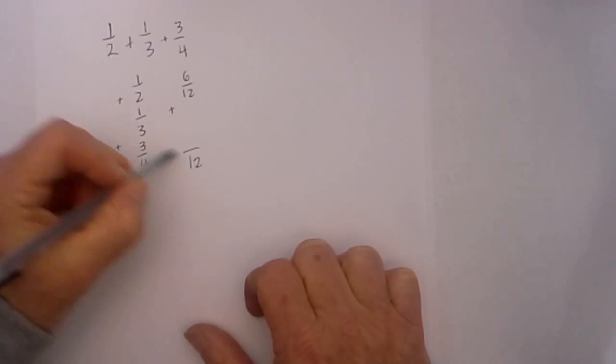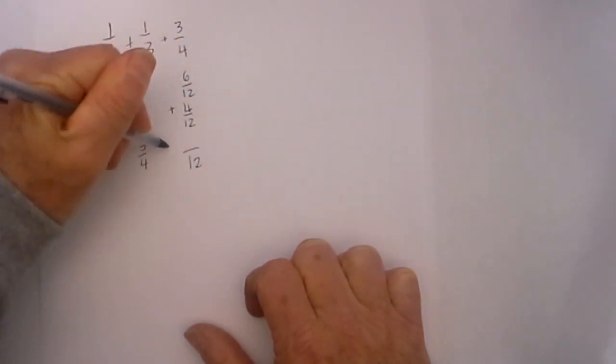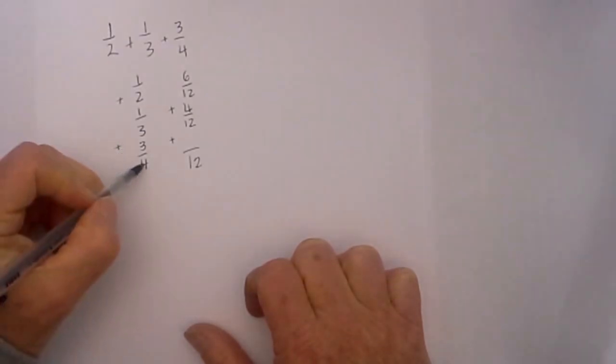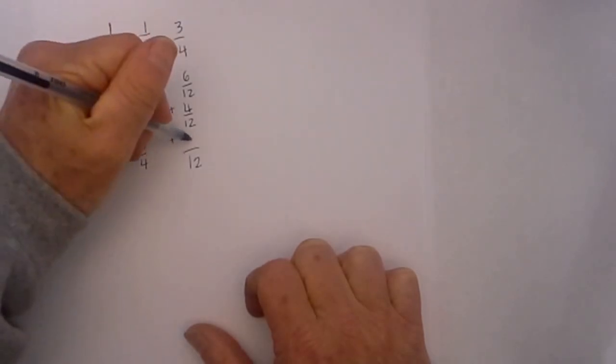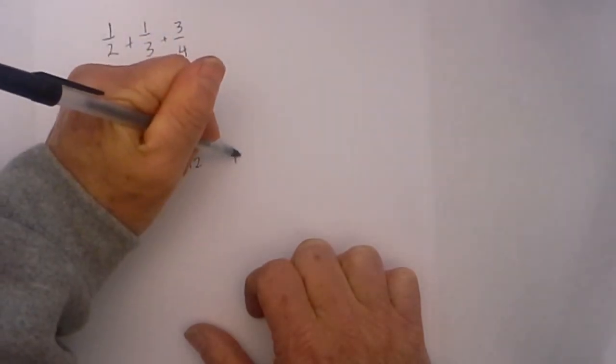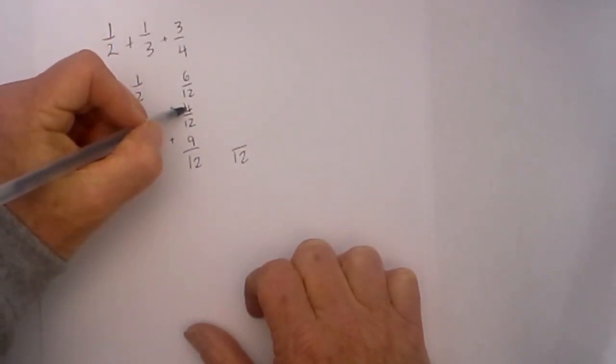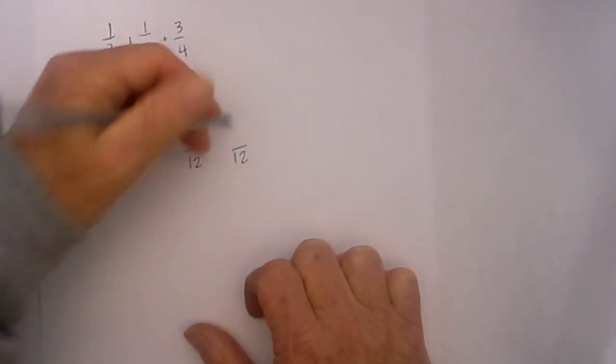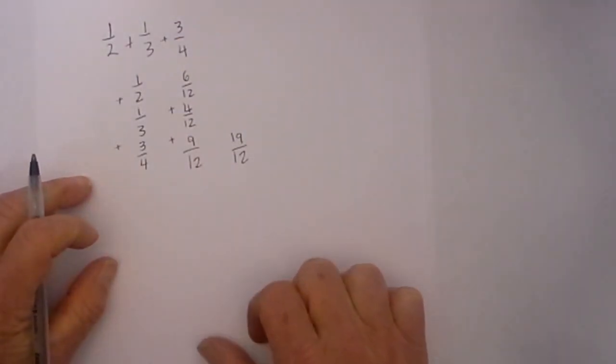Three goes into twelve four times, four times one is four, so I have four twelfths. And then the last one: four goes into twelve three times and three times three is nine. I then add them up and twelve will remain, so I have six plus four is ten plus nine is nineteen over twelve, which was my common denominator.